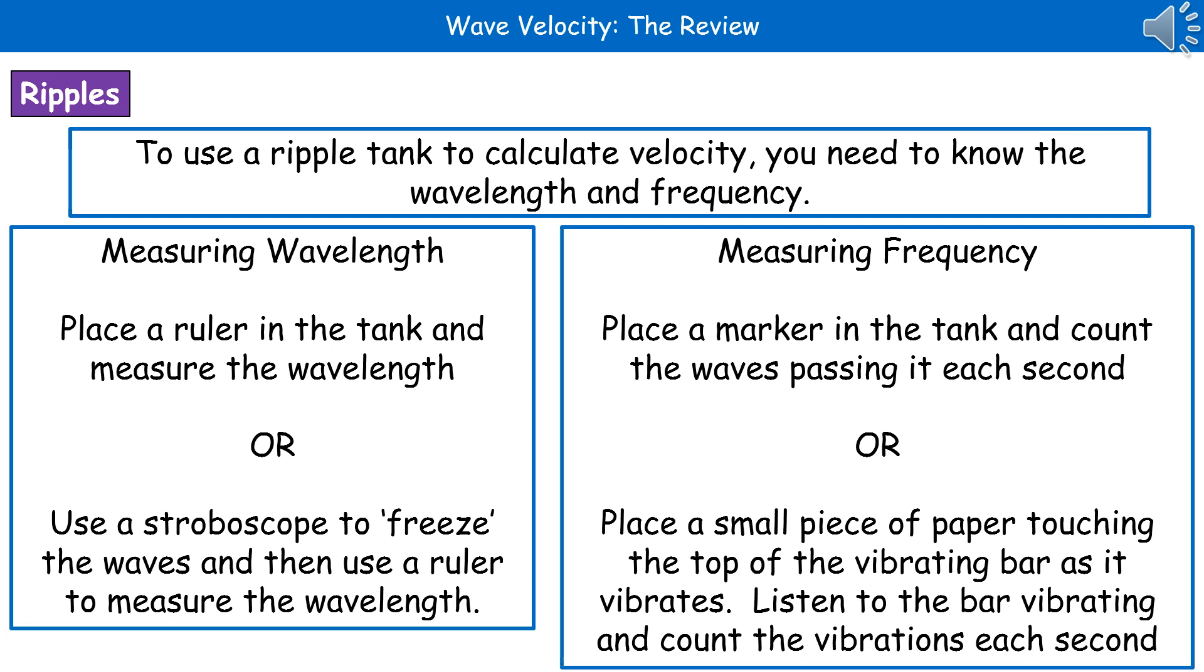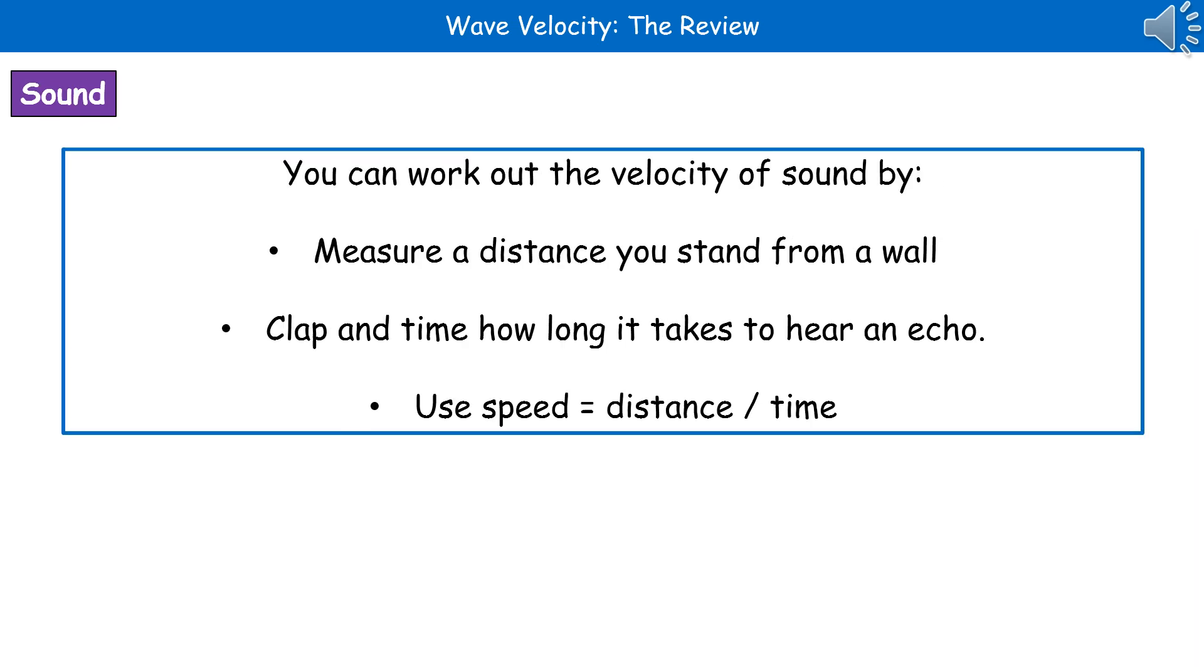If we wanted to measure the velocity of sound, we can do this in a couple of ways. First one, you can literally measure the distance you stand from a wall, so you've got the distance in meters. Clap your hands just the once and then time how long it takes to hear an echo. Then we can use speed equals distance divided by time, and that will give us the velocity of our sound.